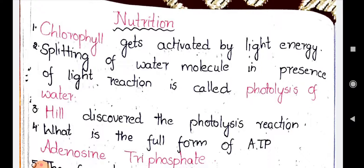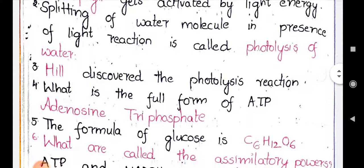The fourth question: 'What is the full form of ATP?' The full form of ATP is adenosine triphosphate.